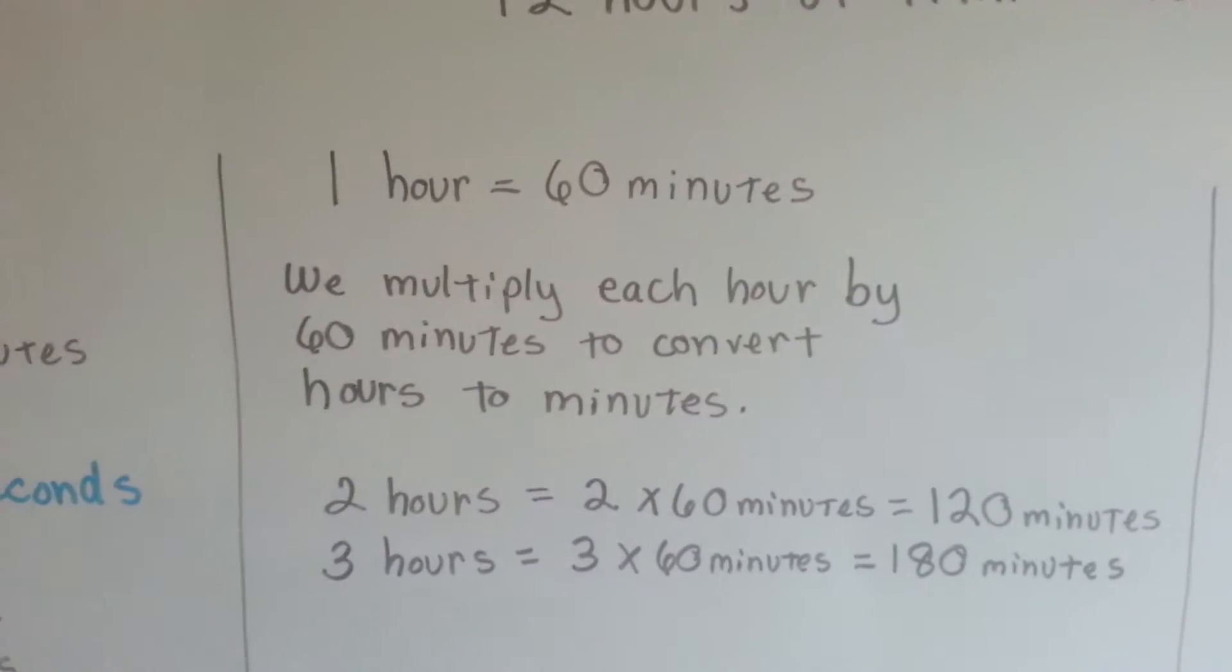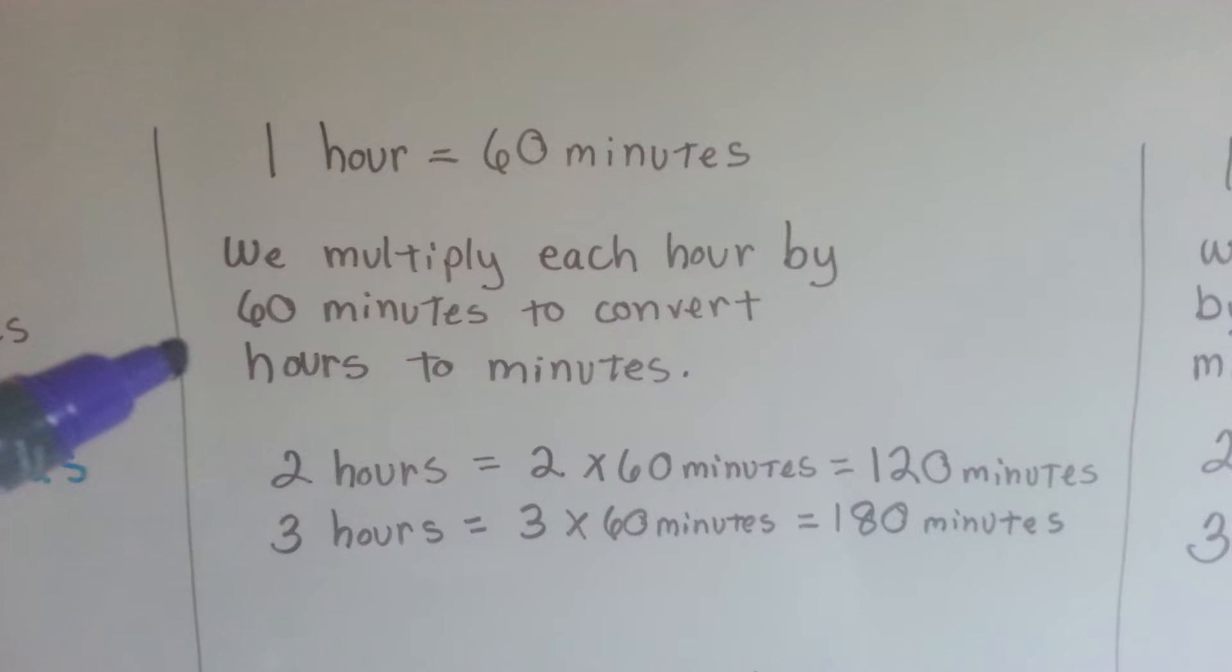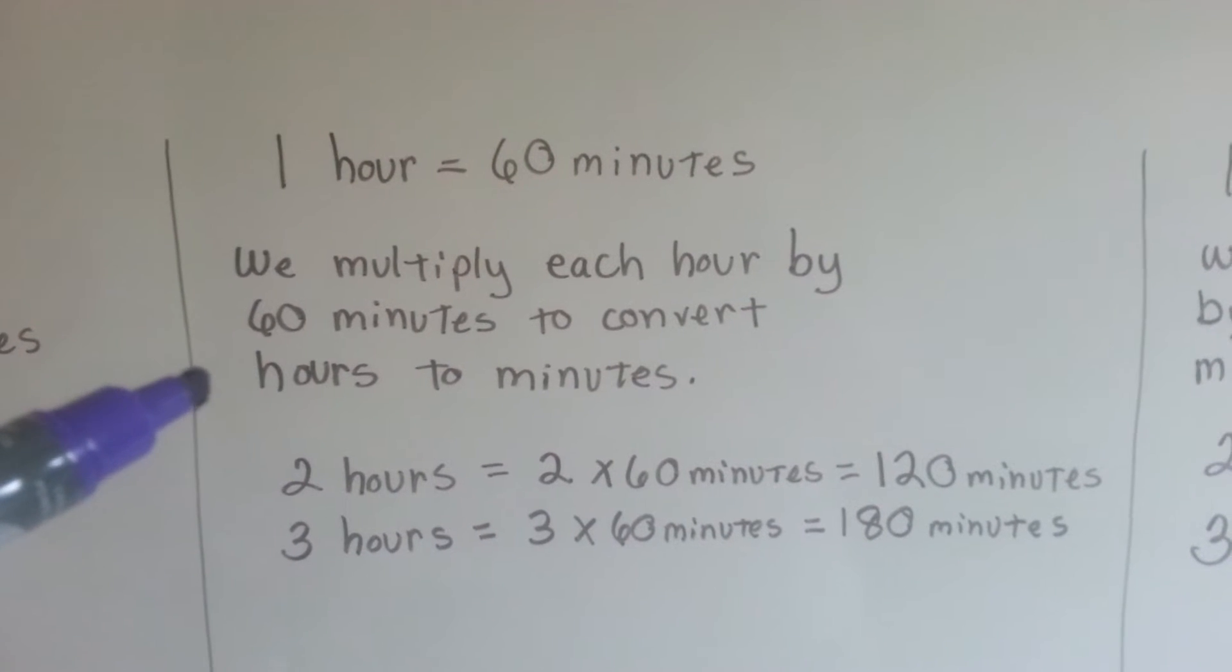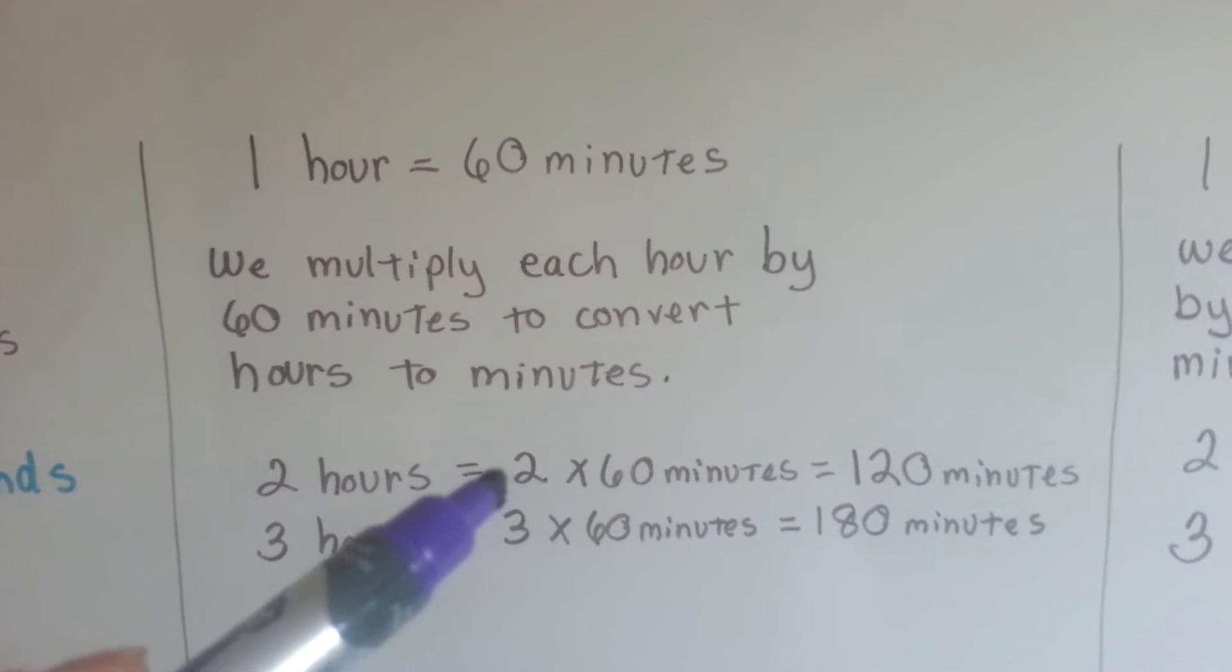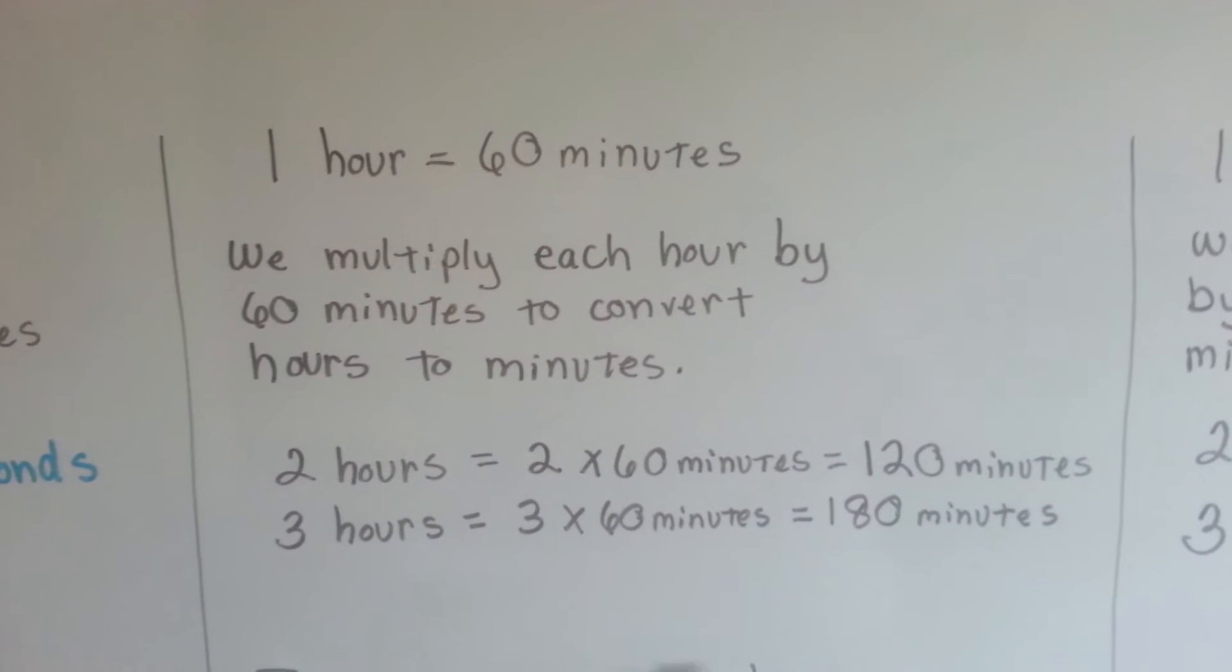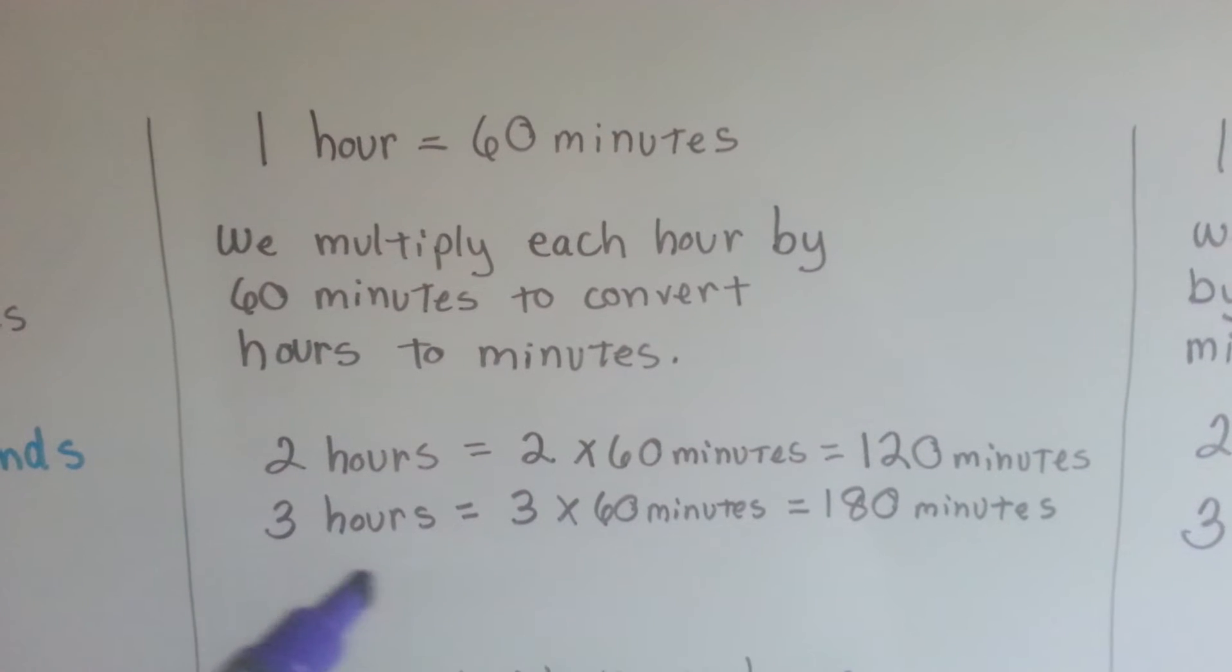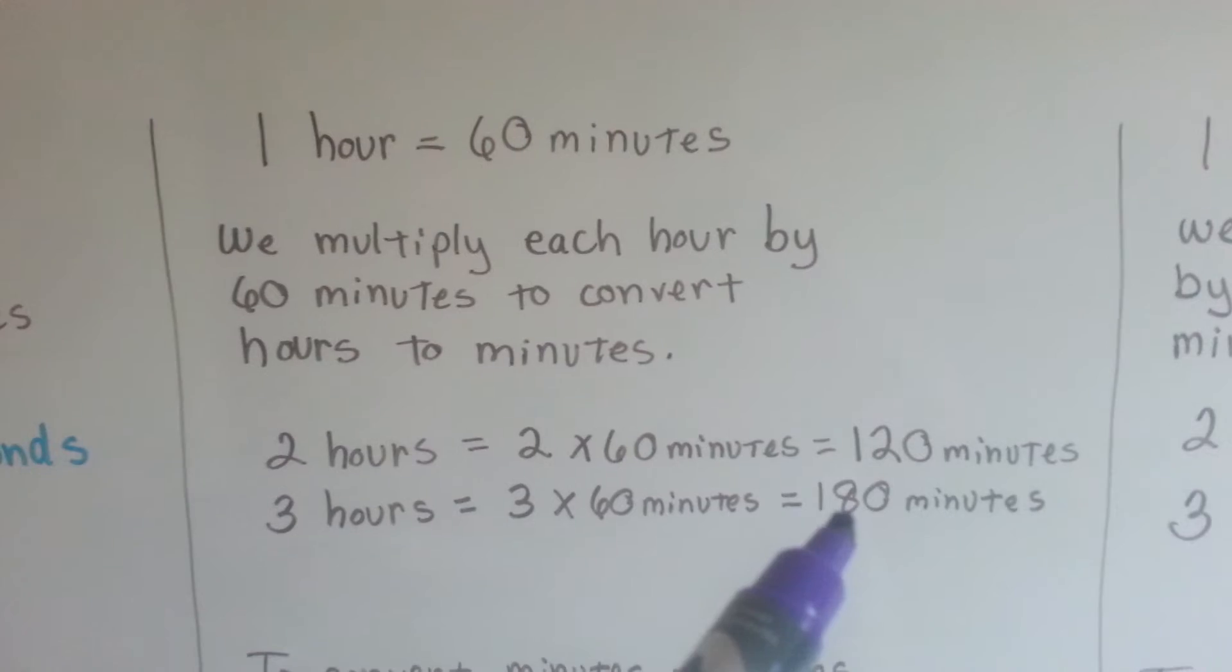So because 1 hour is 60 minutes, we can multiply each hour by 60 minutes to convert the hours into minutes. If you have 2 hours, you multiply 2 times 60 minutes, and it's 120 minutes. For 3 hours, you multiply 3 times the 60 minutes, and it's 180 minutes.